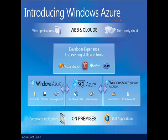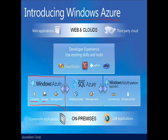Windows Azure is actually a set of cloud technologies, each providing a set of services to application developers. Windows Azure itself is a Windows-based environment for running applications and storing persistent data on servers in Microsoft data centers. Your applications reside in what's called the compute portion of Windows Azure; the data is in storage. This storage is not SQL Server — not a relational database. We'll find out about three different types of storage provided by Windows Azure.